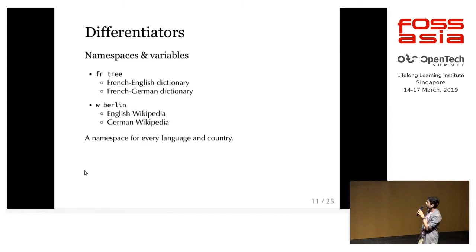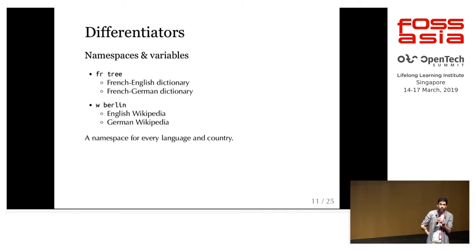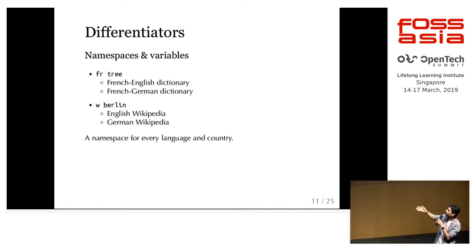Another difference is the French dictionary example. We have namespaces and variables. The problem is when we search for a dictionary, do we want French-English, French-German, or French-Polish? It depends on the language we speak. This is why in Trovo we have namespaces — the same shortcut can be used in different namespaces.